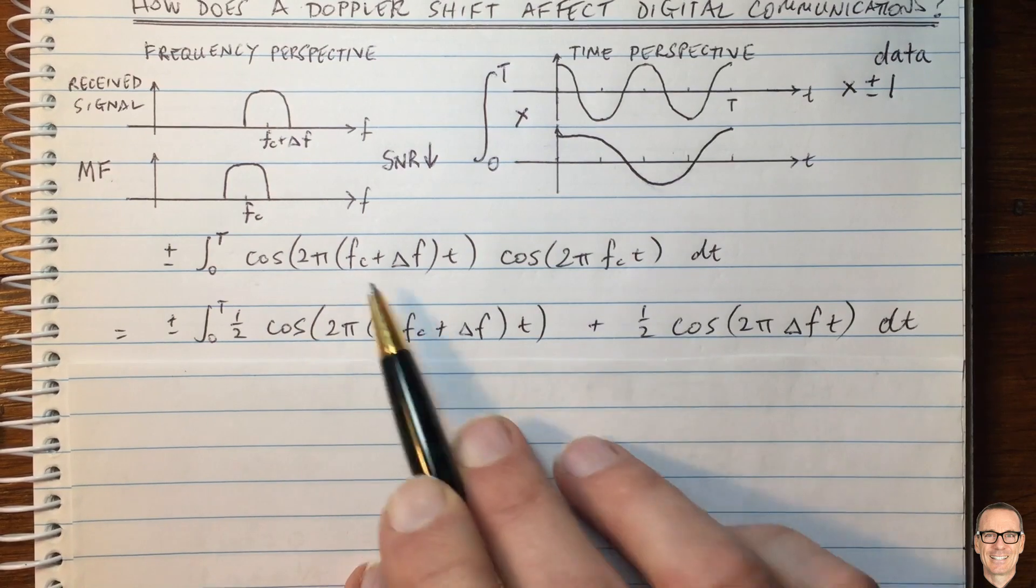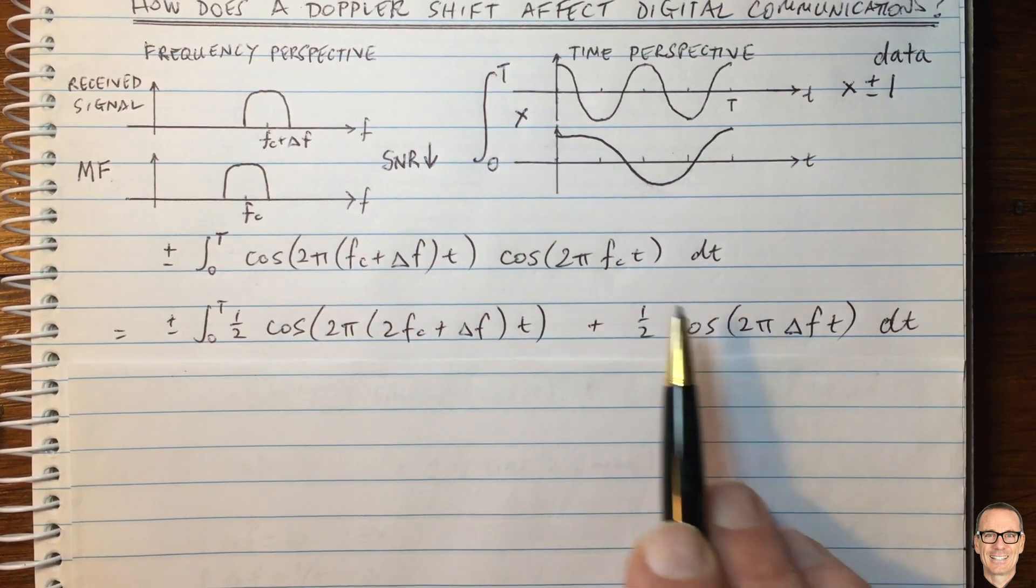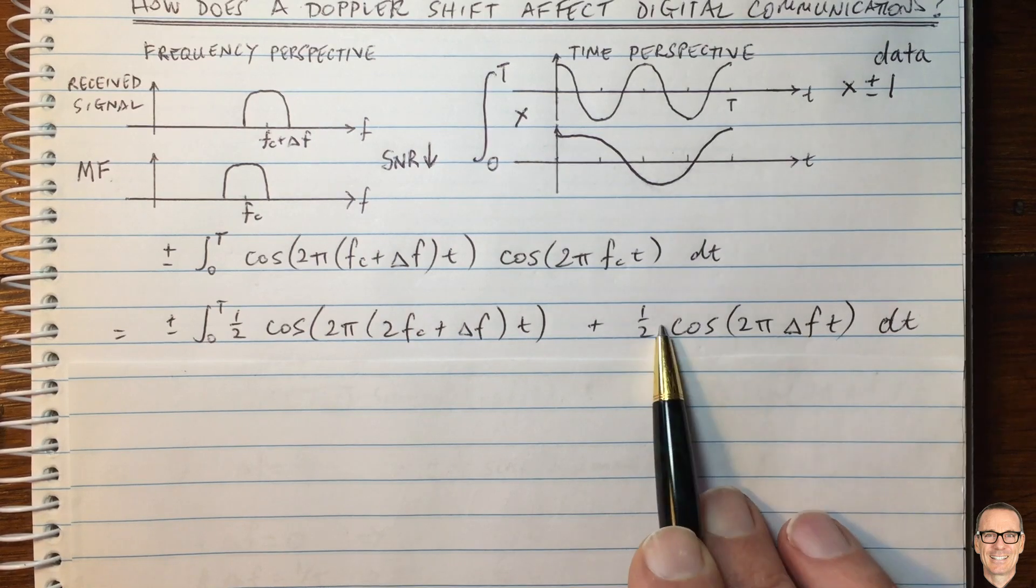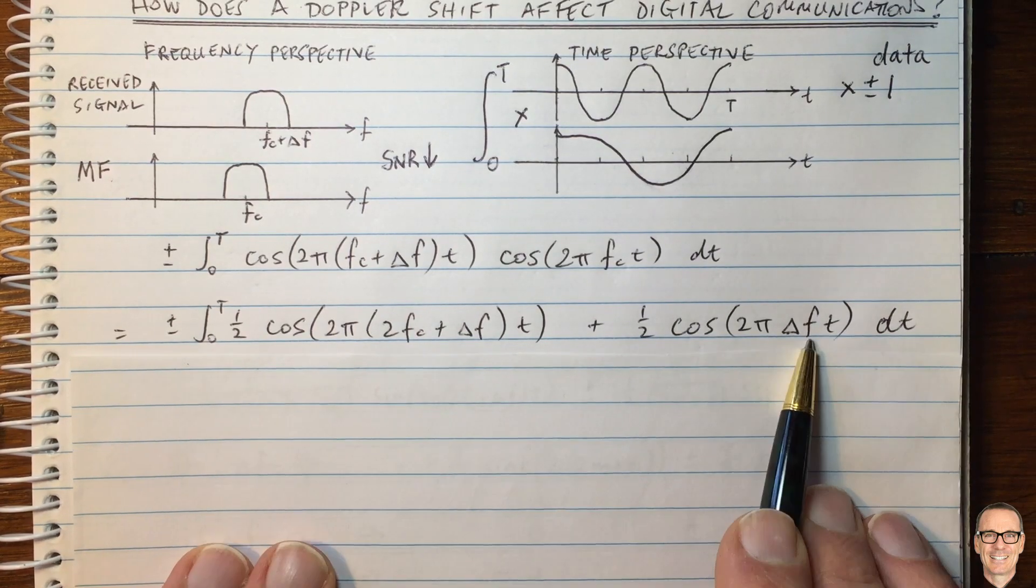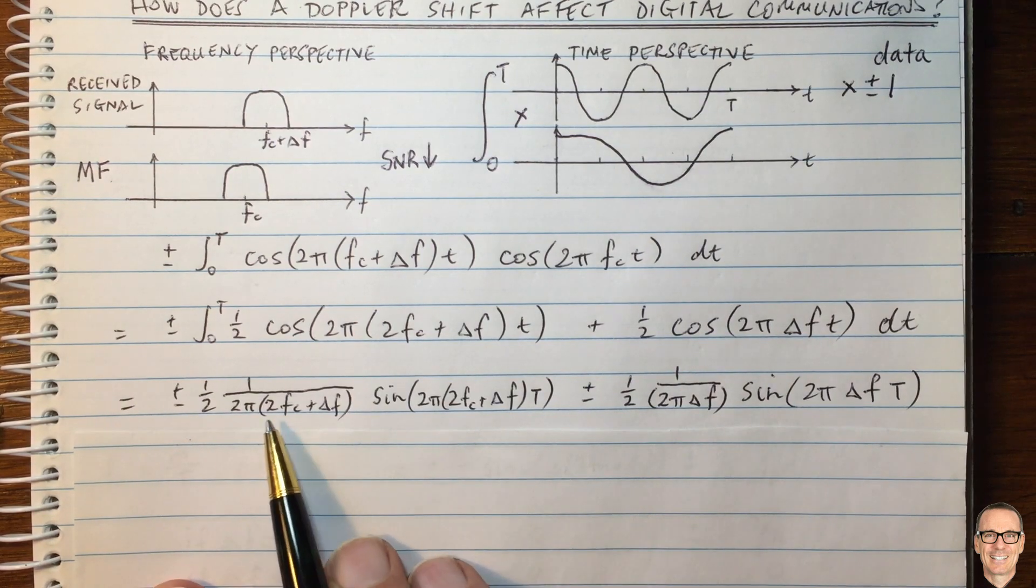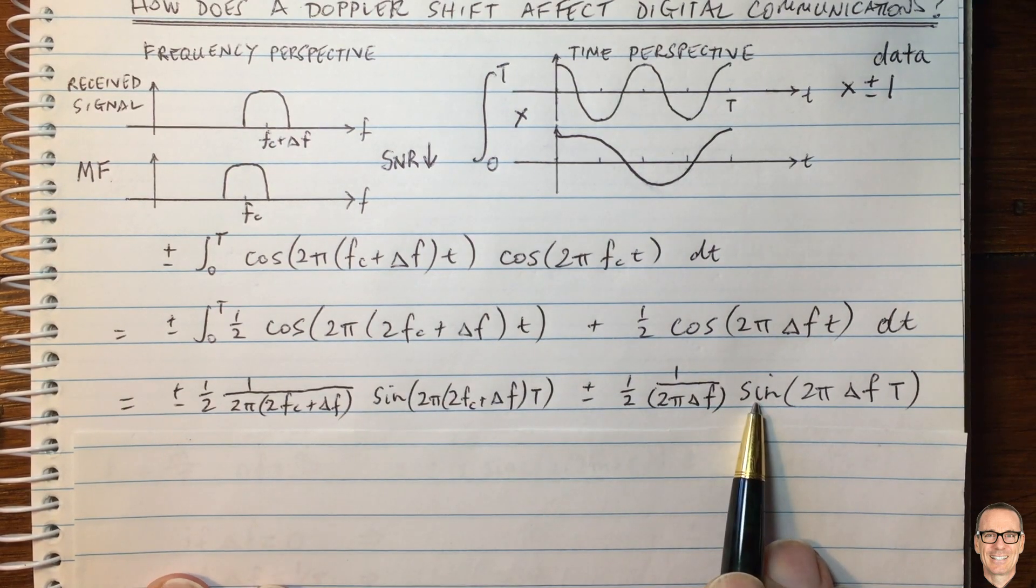So if we see this one here, the Fc is cancelled from the subtraction of these two terms, and we're just left with the delta F term in this second term here. So let's perform these two integrals, and the integral of a cos is a sine, and so we have these two terms here.